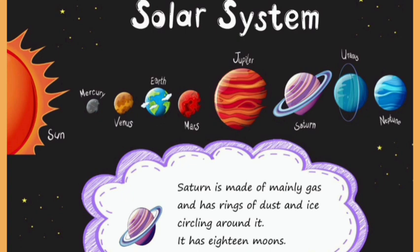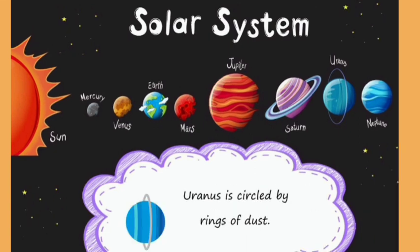Next planet is Saturn. Saturn is made of mainly gas and has rings of dust and ice circling around it. It has 18 moons.